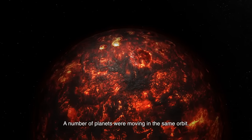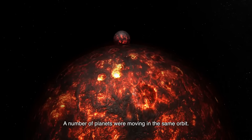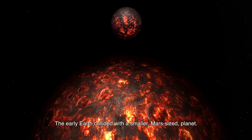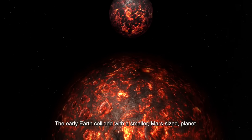A number of planets were moving in the same orbit. The early Earth collided with a smaller, Mars-sized planet.